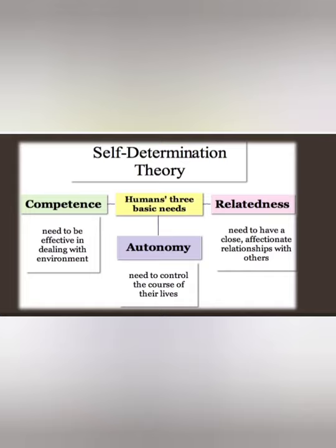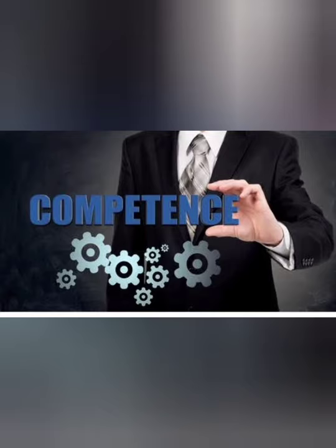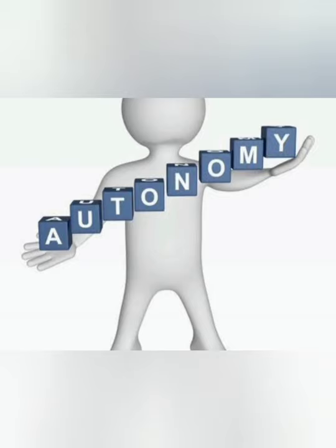The first basic need is competence. Competence means that humans feel capable, do not feel inferior, and effectively deal with others. The second is autonomy. Autonomy means that a human is self-controlled, does not let anyone else control their life, and can take their own decisions and choices rather than depending on others.